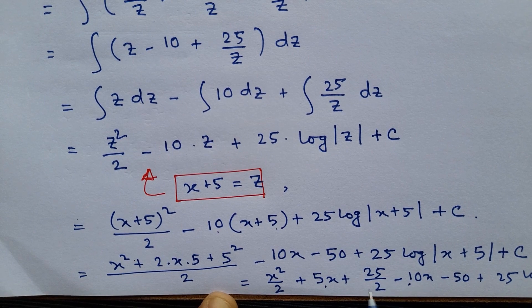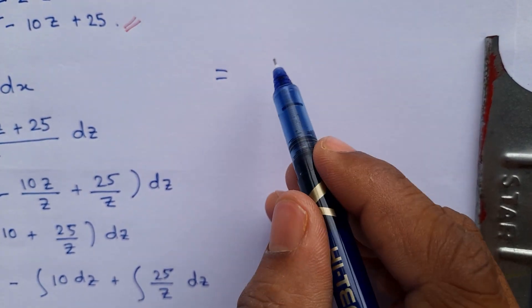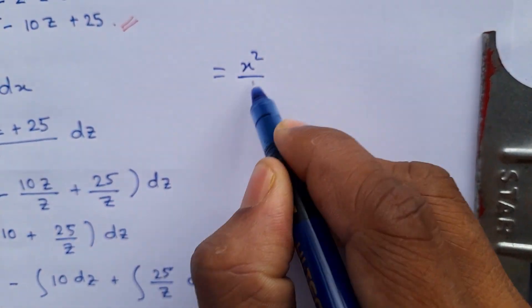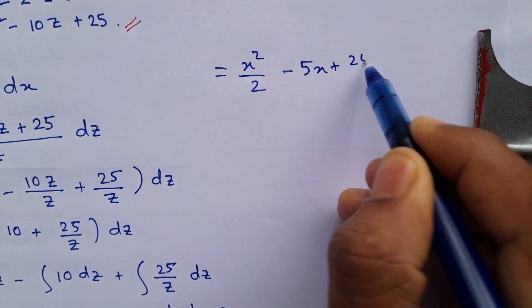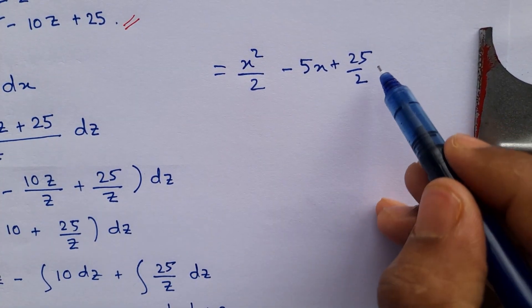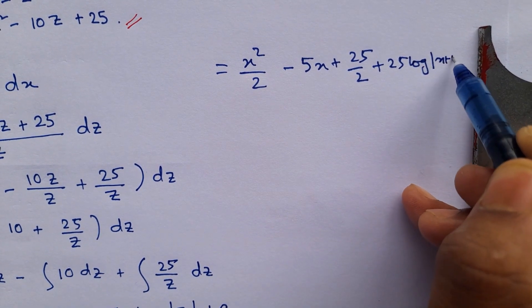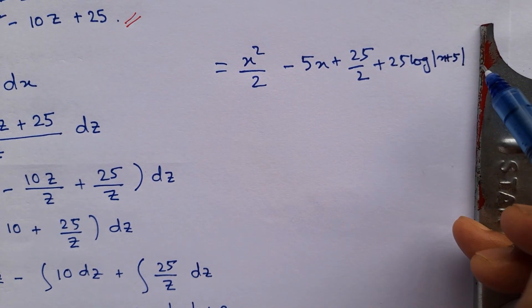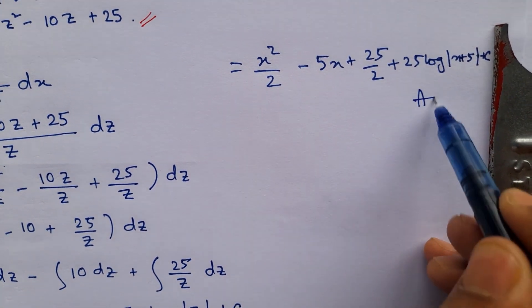So 5x minus 10x will be minus 5x. This can be simplified as x squared by 2 minus 5x plus 25 by 2 plus 25 log of mod x plus 5 plus c. This is the answer.